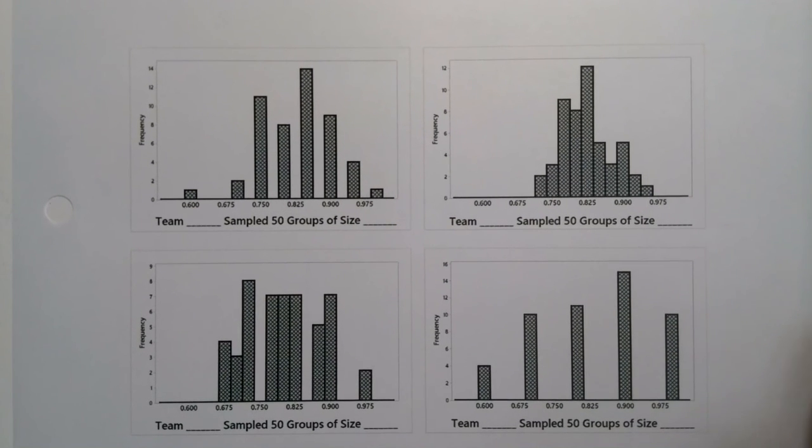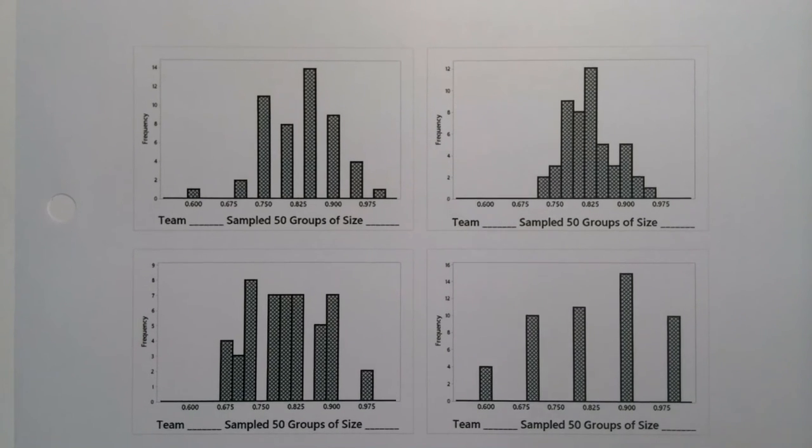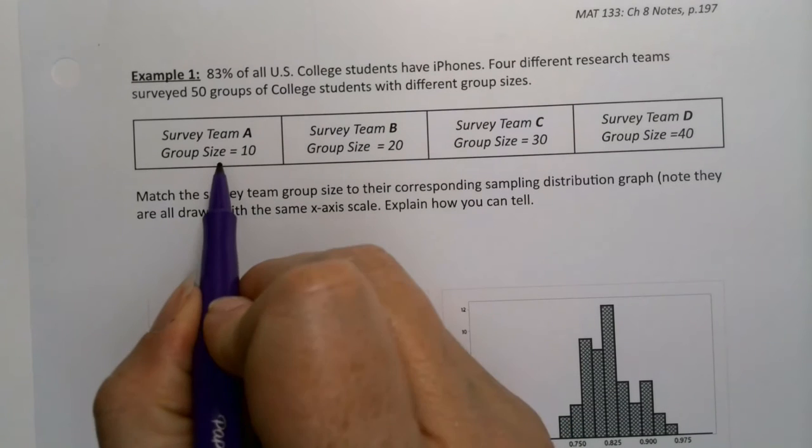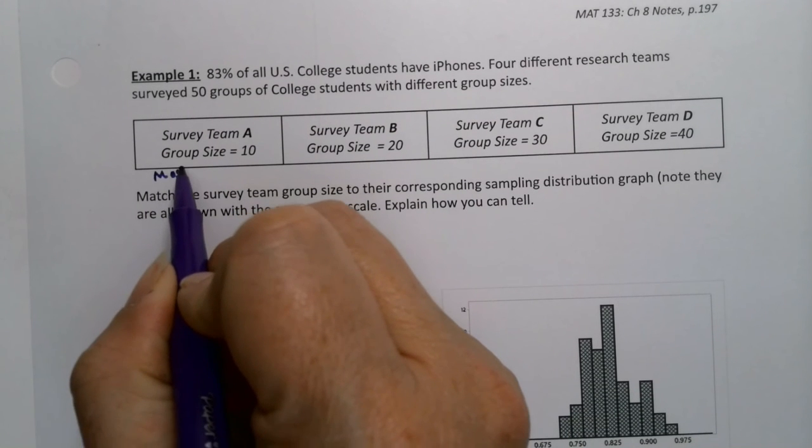Well, I think it's really obvious who the largest and the smallest are. So the smallest group will have the most spread. Remember that, right? So smallest group size, this will have the most spread.